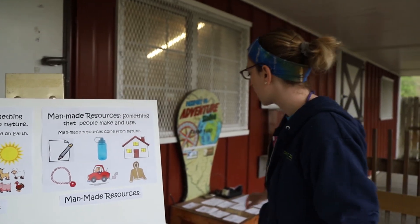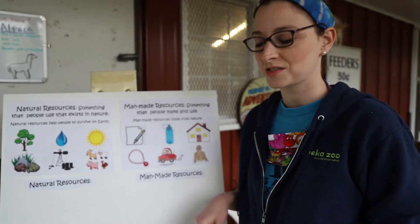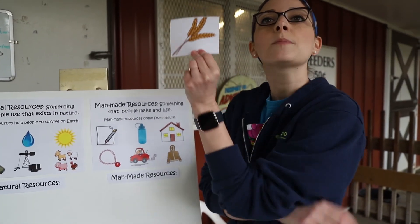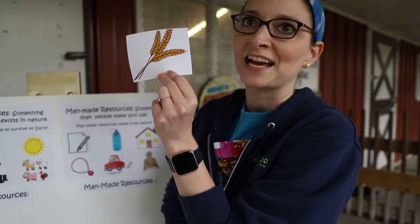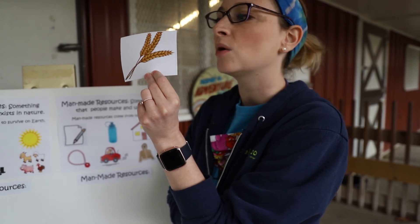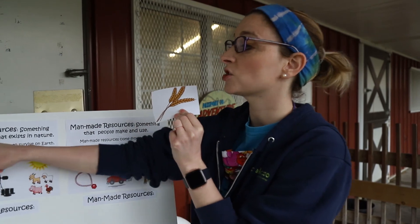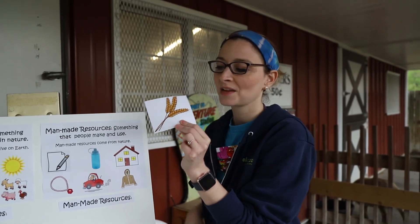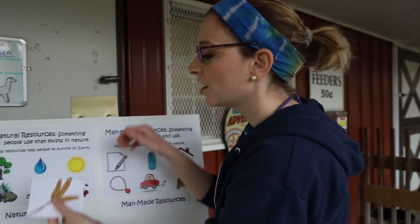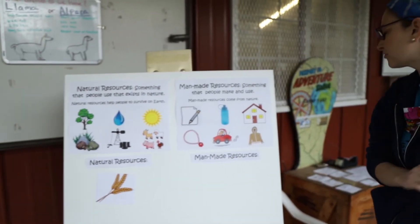Let's practice at home. I want you guys to tell me if something is a man-made or a natural resource. The first one is a picture of wheat. Wheat is a plant and it grows out in the wild. Is it a natural resource or a man-made resource? If you said natural, you are right. Remember, all plants come from nature.